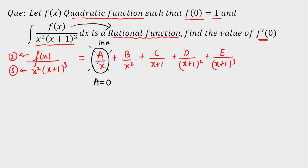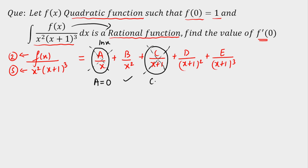Integrating b/x² gives -1/x, which is rational — so that term is fine. But integrating c/(x+1) gives c·ln|x+1|, which is not a rational function. So this term must also be 0, meaning c = 0. The fourth and fifth terms (d and e) are allowed because their integrals are rational functions.